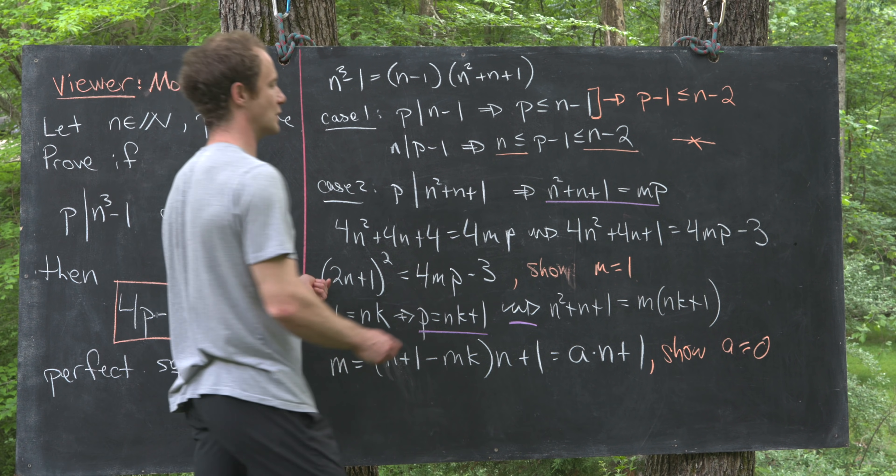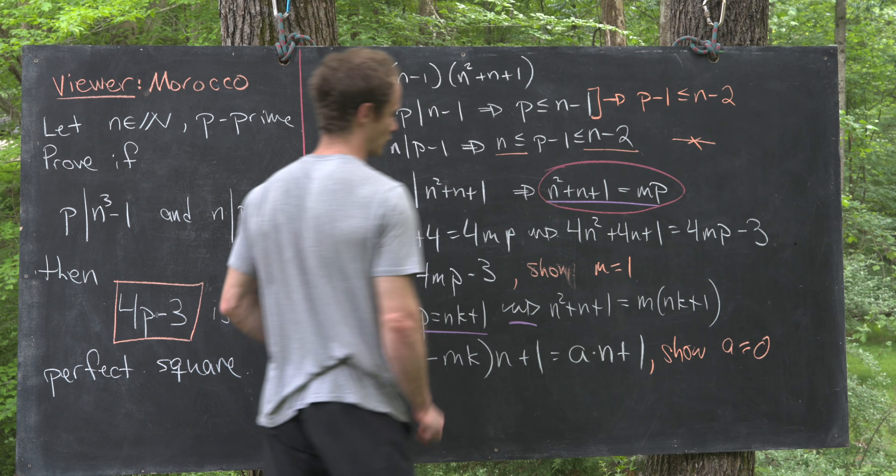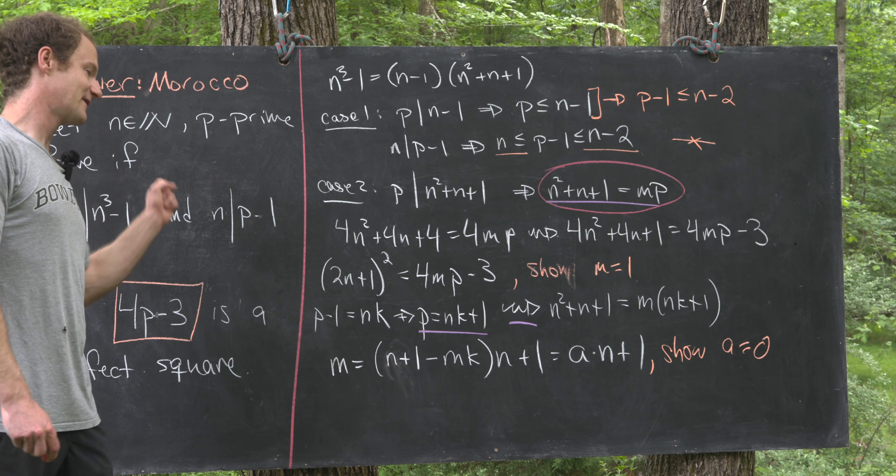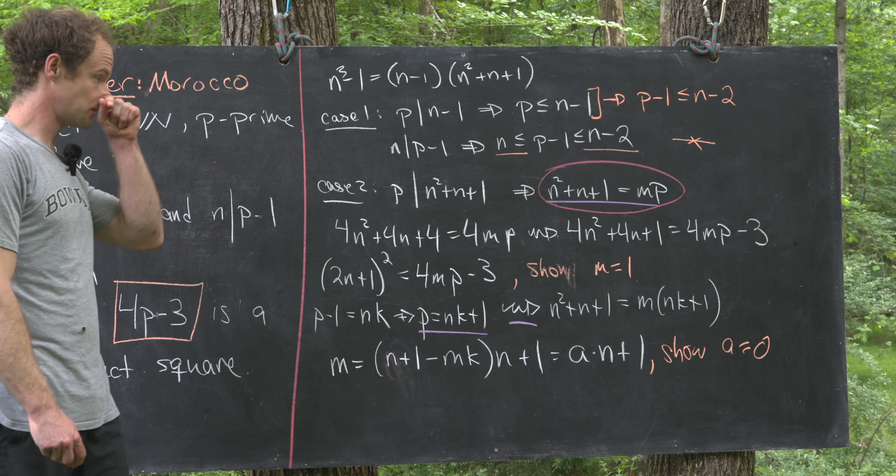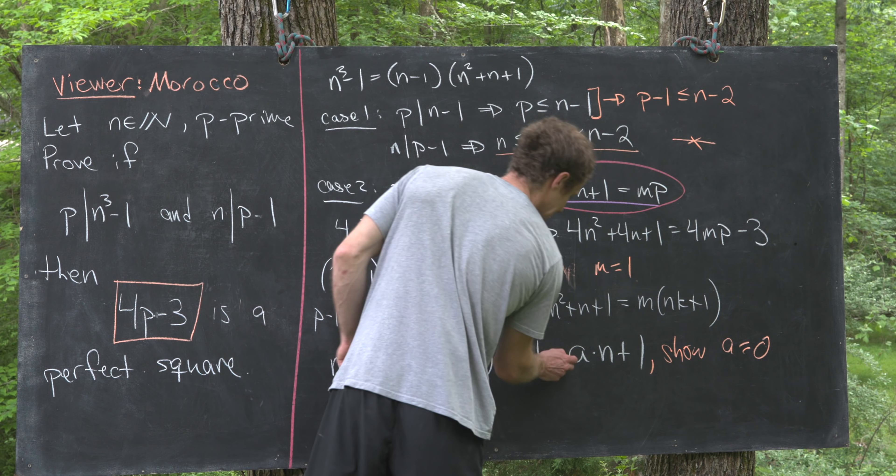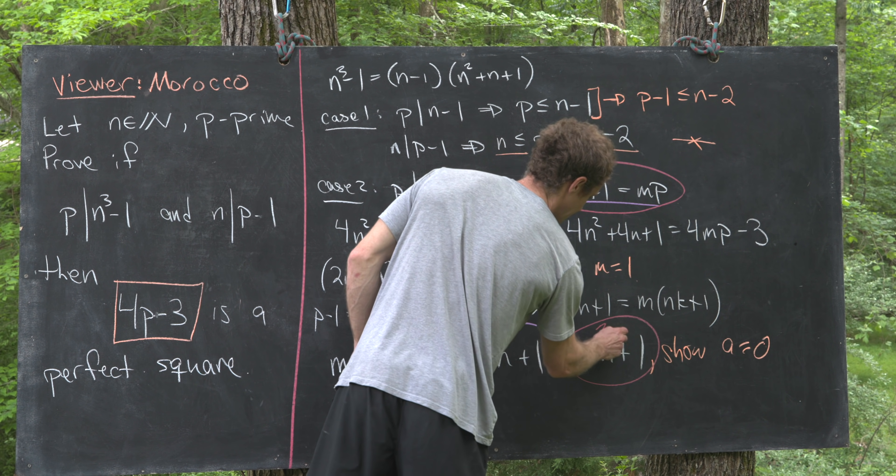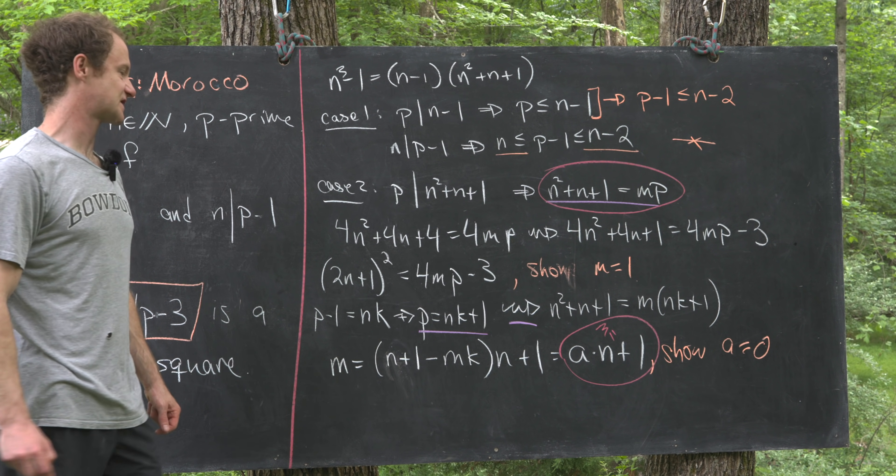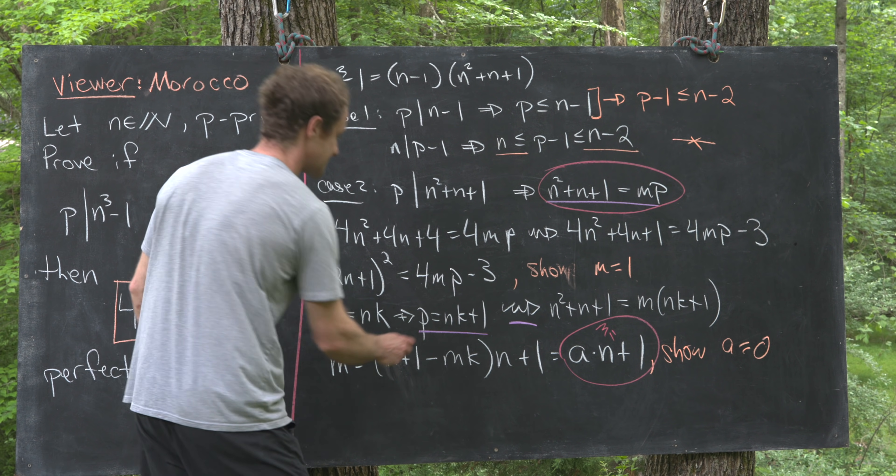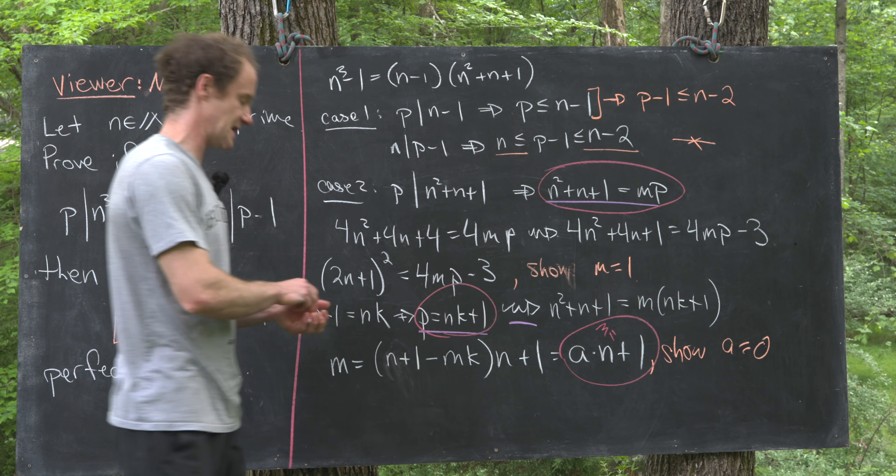I'm going to go back to this purple equation, which now I'll circle in red, and I'm going to leave the left-hand side as is, but I'll replace the right-hand side with this value for m, or I guess I should say this expression for m, and then this expression right here for p.